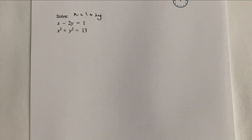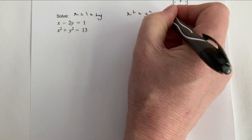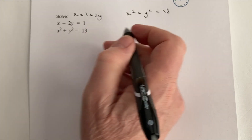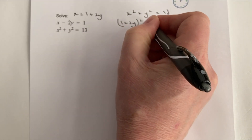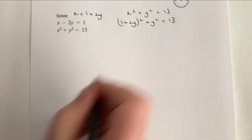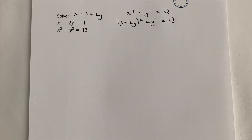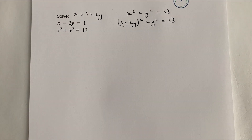The equation starts as x² + y² = 13, but rather than writing x I'm going to write this value, so (1 + 2y)² + y² = 13. Then really it's a case of expanding this and figuring out the value of y, and then substituting back into here to get the value of x once we've got the value of y.